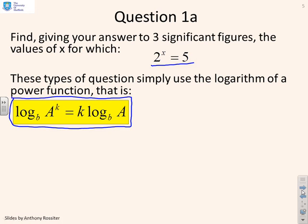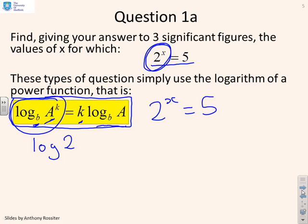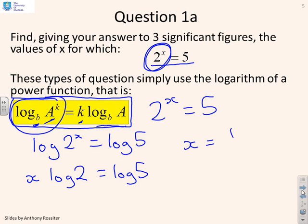So what I'm going to do is use this particular law: log_b(a^k) = k log_b(a). Because I can see I've got 2^x, so I want the log which has that power in it. So I've got 2^x = 5. Now I'm going to take logs of both sides: log(2^x) = log 5. Then I can apply my power law: x log 2 = log 5, or x = log 5 / log 2. And if you put that in your calculator, you'll find that x = 2.322.